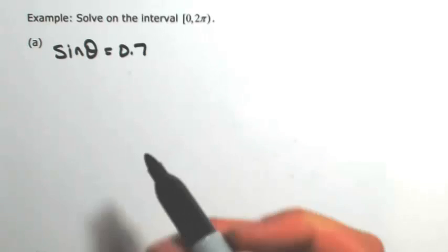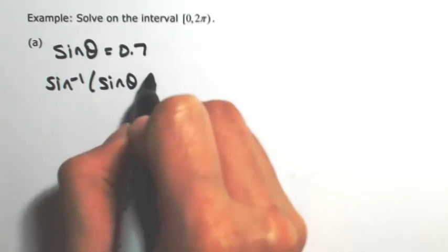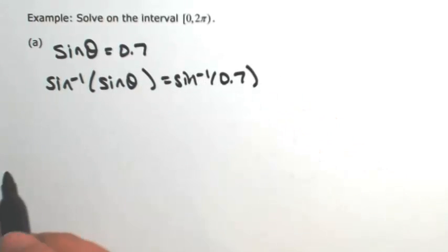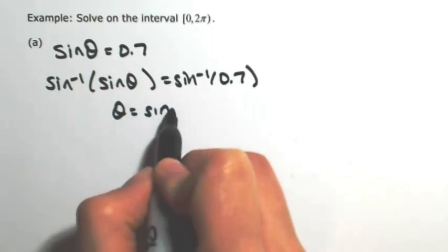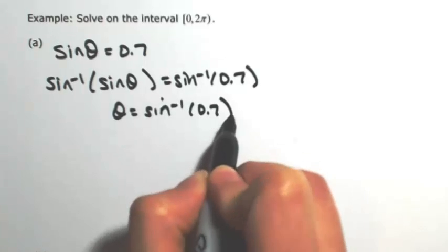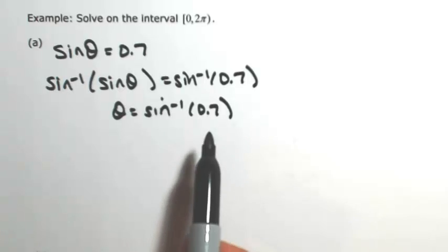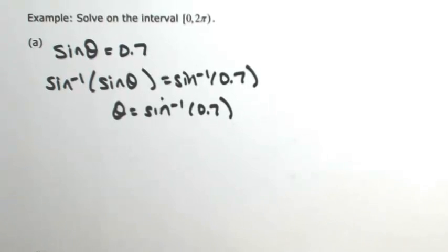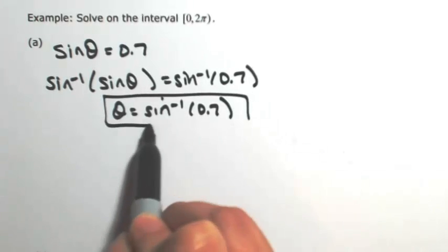Undoing the sine involves its inverse, so I'm going to take the inverse sine of both sides so that they undo each other, leaving me with θ. Keep in mind that the domain of the inverse sine is between -1 and 1. 0.7 is certainly between -1 and 1, so this is a value that's not undefined, so here is an answer.